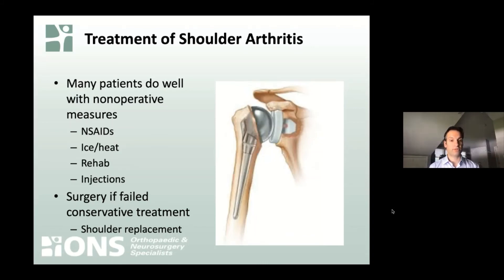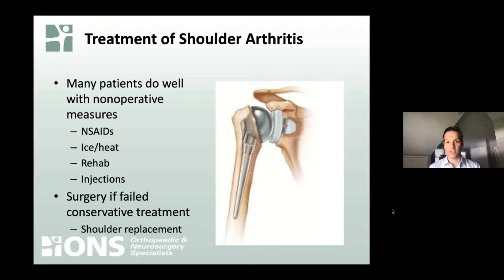How do we treat shoulder arthritis? Again: ice or heat, anti-inflammatories, stretching, rehab, and a strength and conditioning program. Sometimes we'll consider injections if it doesn't get better. As a last line of defense, we can replace the shoulder if the arthritis is severe and debilitating. Shoulder replacement surgery is very reliable and predictable, with outcomes very similar to hip and knee replacement — the technology has really caught up. It's a great option for people who can't improve otherwise.